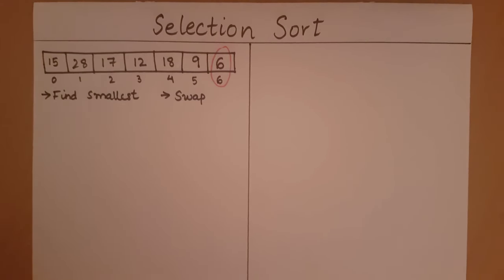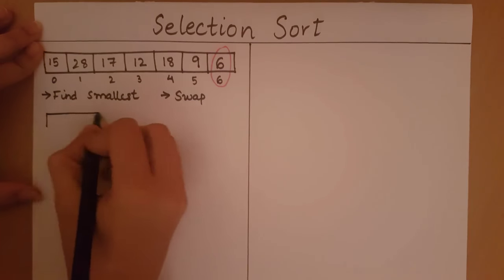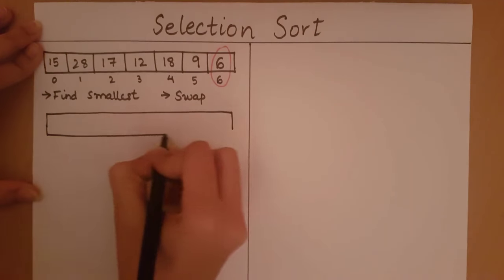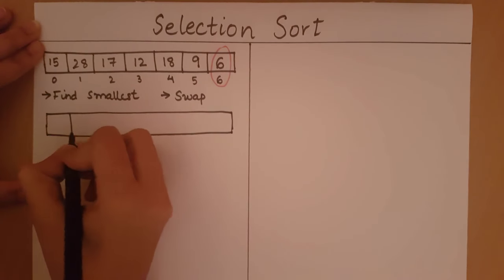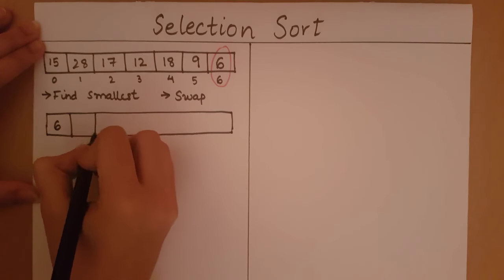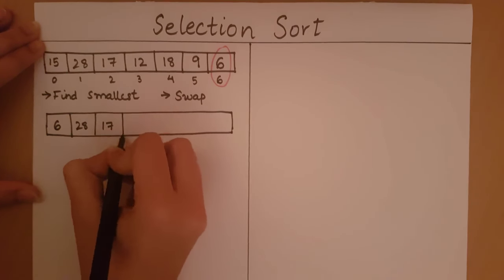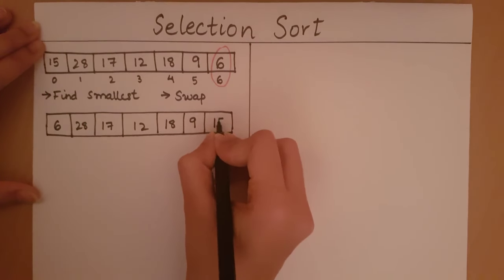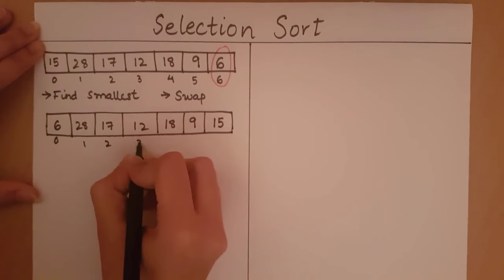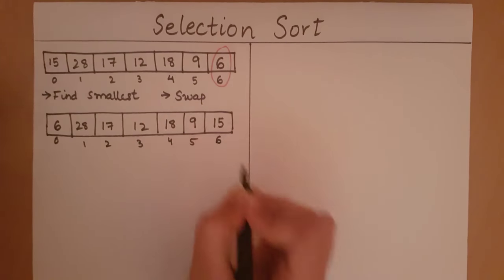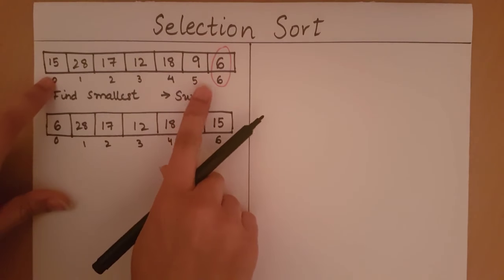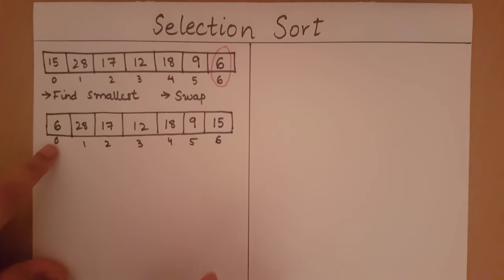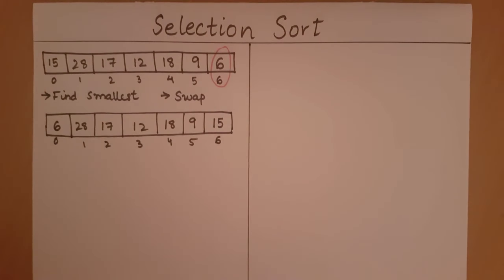Let's perform the swap and see how the array looks. We have swapped the positions of 6 and 15 — 6 has come to the 0th position, 15 has come to the 6th position. Now we say 6 has arrived at its correct position.